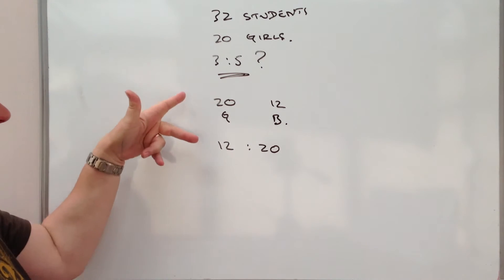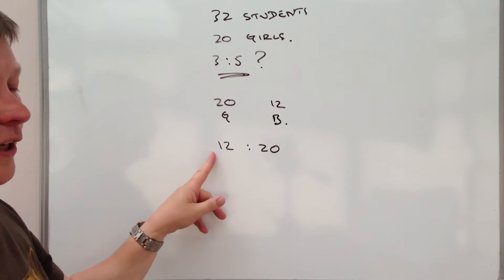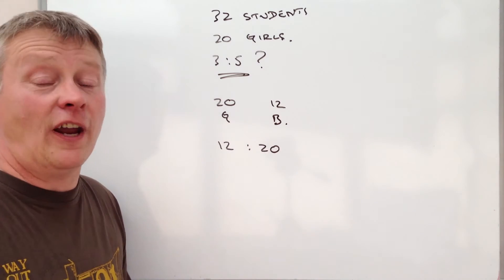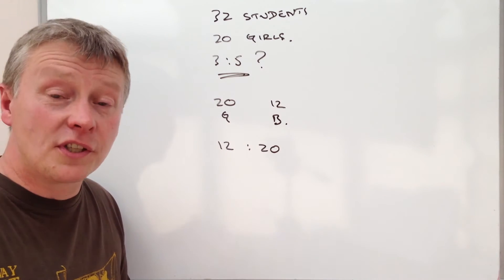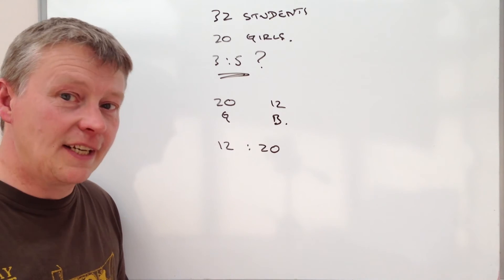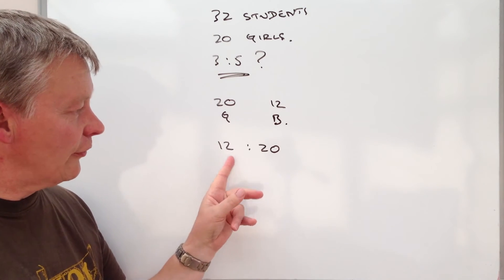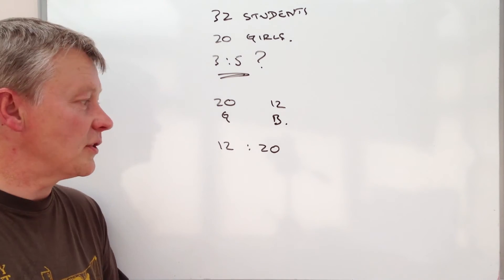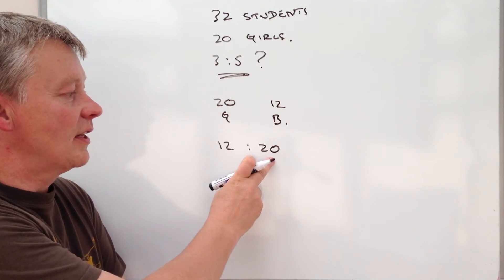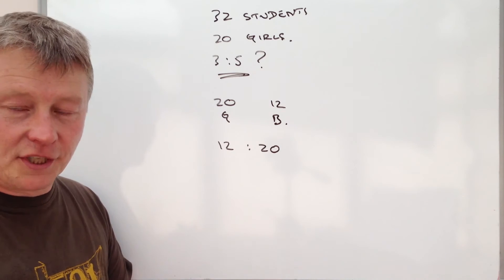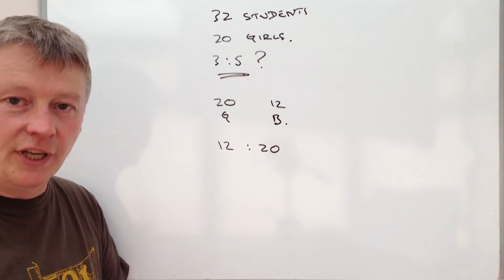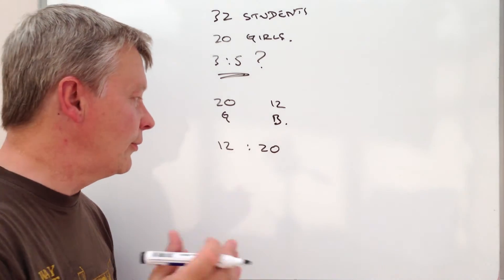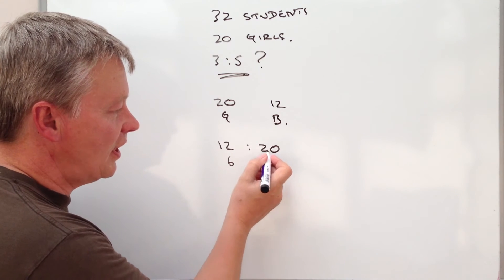So what we're asking is: is 3 to 5 a simplified version of 12 to 20? Because ratio acts very much like fractions, and what we look to do with ratios is make them as simple and as easy to use as possible. With 12 to 20, we can reduce that by dividing each side by a number to make it smaller. Some of you will say we could divide both by 2 — if we do that, we get a ratio of 6 to 10.